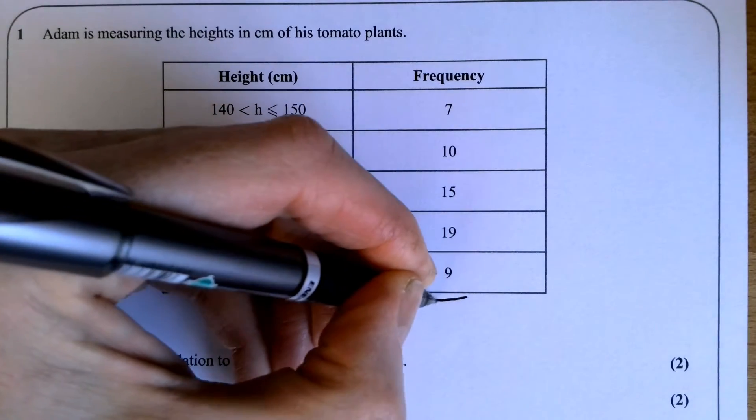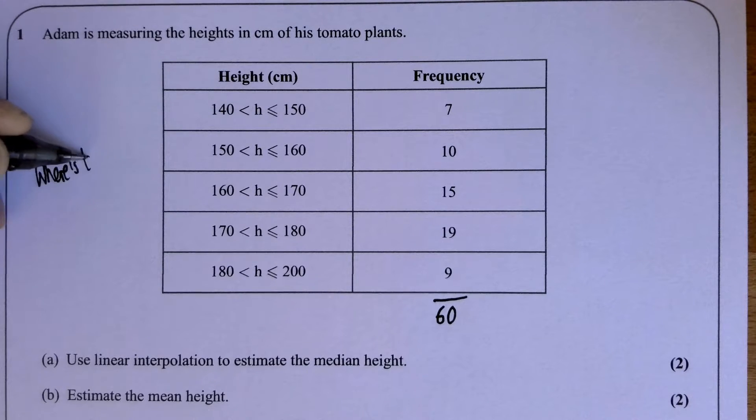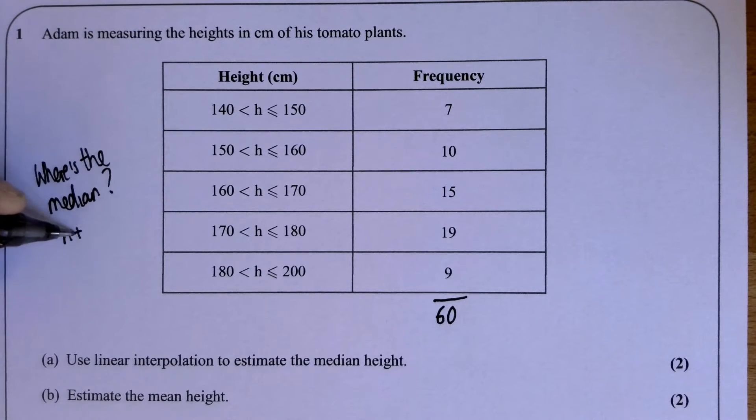Now normally with a list of numbers, if you want to know where's the median, you would normally use n plus 1 over 2. Hopefully that's something you've done before. So with seven values, to work out which one's the median, you would do 7 plus 1 divided by 2. The fourth value is the median.